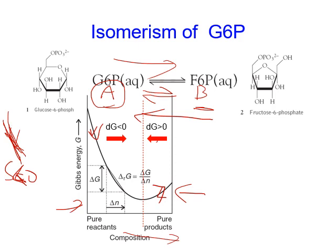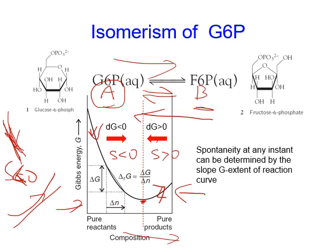On the right side, the forward reaction is non-spontaneous and the reverse reaction is spontaneous. According to mathematics, if a curve increases, the slope is positive — left side negative, right side positive. Now there must be a point where the Gibbs energy becomes minimal, and that is when the reaction reaches equilibrium. So the spontaneity at any instant can be determined by the slope of Gibbs energy as a function of composition, and in the next slide we are going to derive the equation to calculate the Gibbs energy as a function of composition.